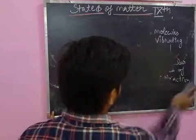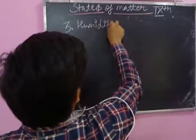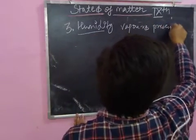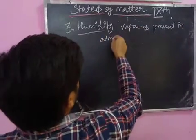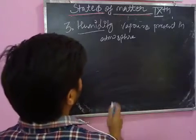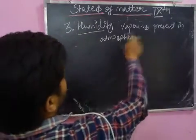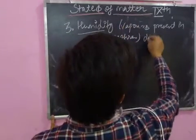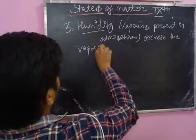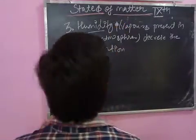The third factor is humidity. Humidity refers to vapors present in the atmosphere. If the atmosphere is already saturated with vapors, it doesn't accept any more. High humidity in the atmosphere decreases vaporization — the greater the humidity, the less the evaporation.